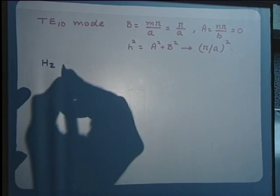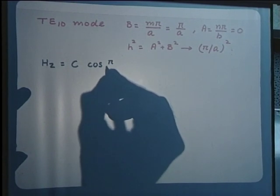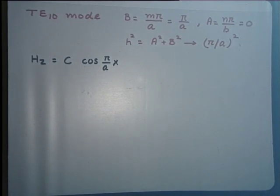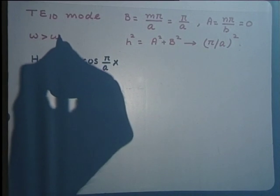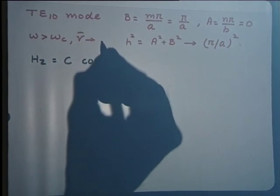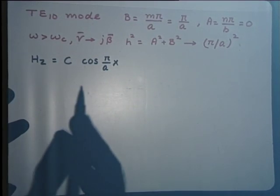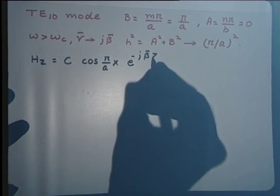We have H_z equal to C times cosine(πx/a). Writing down the field expressions in the frequency range where propagation without attenuation takes place — where ω is greater than the corresponding cutoff frequency — we can have γ̄ going to jβ̄. Making this substitution, one gets H_z equal to C·cos(πx/a)·e^(−jβ̄z).